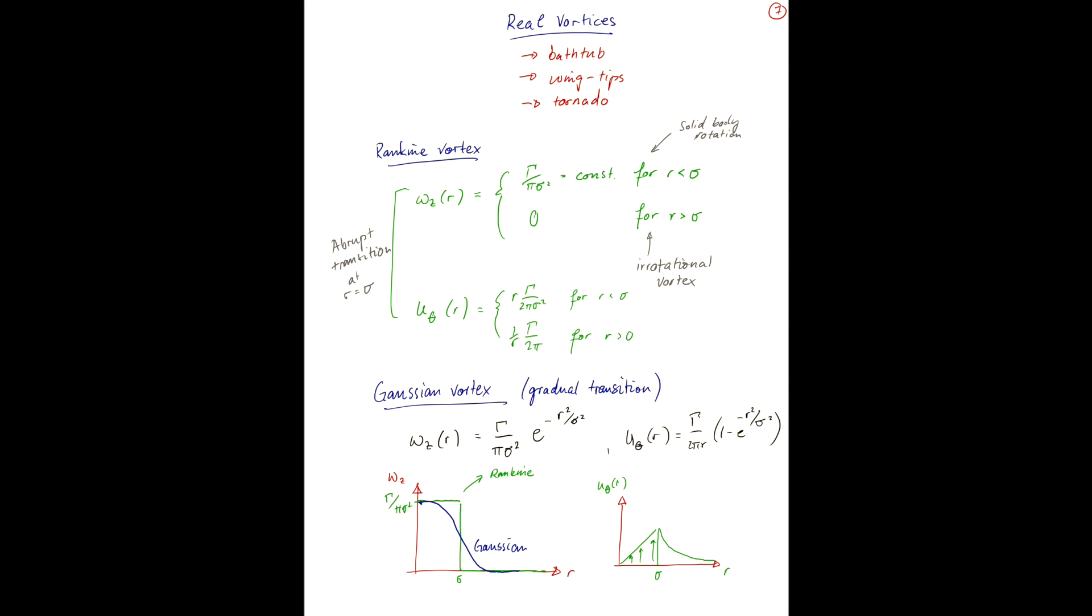Whereas for the Gaussian, u theta versus r has this type of shape here. And that concludes our discussion of idealized simple flows.